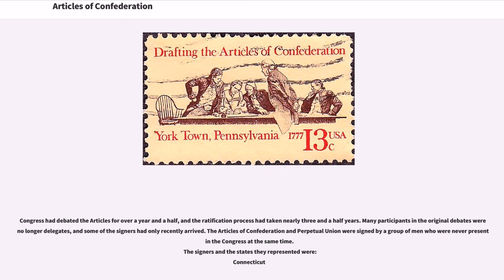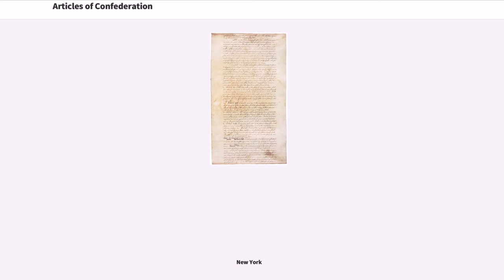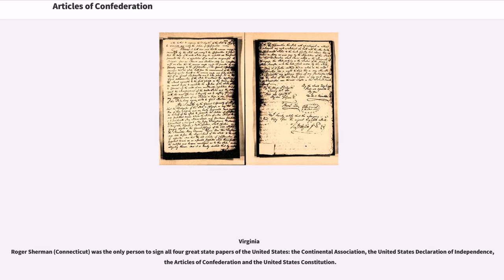Congress had debated the Articles for over a year and a half, and the ratification process had taken nearly three and a half years. Many participants in the original debates were no longer delegates, and some of the signers had only recently arrived. The Articles of Confederation and Perpetual Union were signed by a group of men who were never present in the Congress at the same time. The signers represented Connecticut, Delaware, Georgia, Maryland, Massachusetts Bay, New Hampshire, New Jersey, New York, North Carolina, Pennsylvania, Rhode Island and Providence Plantations, South Carolina, and Virginia. Roger Sherman of Connecticut was the only person to sign all four great state papers of the United States: the Continental Association, the United States Declaration of Independence, the Articles of Confederation, and the United States Constitution.